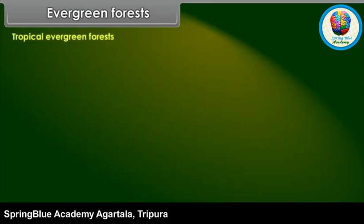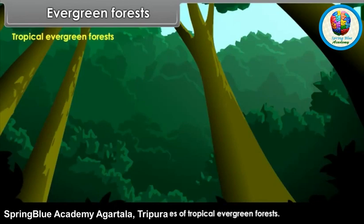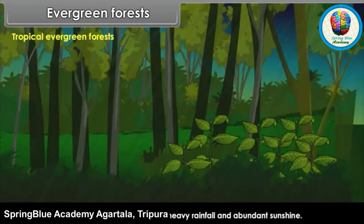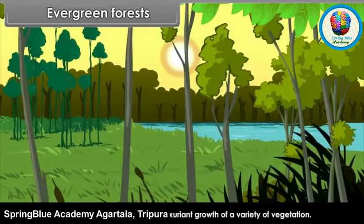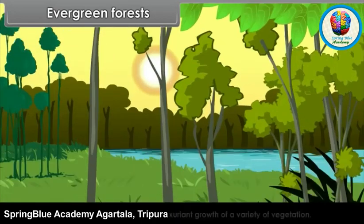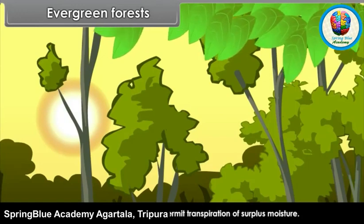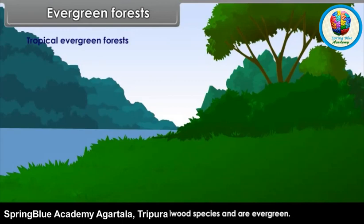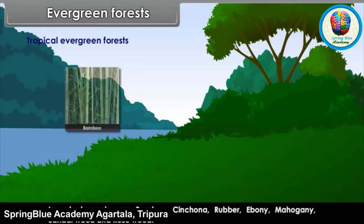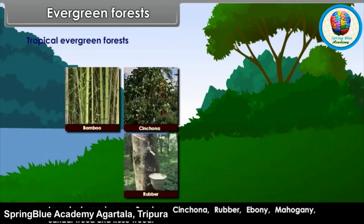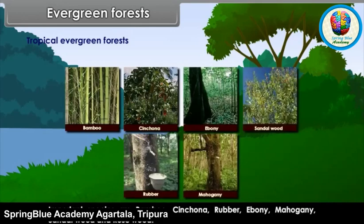Tropical Evergreen Forests: Trees in evergreen forests do not shed their leaves simultaneously during any season of the year. These forests are found in areas of heavy rainfall and abundant sunshine. Hot and humid conditions favor luxuriant growth of a variety of vegetation. Trees have broad leaves to permit transpiration of surplus moisture. These forests consist of hardwood species and are evergreen. Important species are Bamboo, Cinchona, Ebony, Mahogany, Sandalwood and Rosewood.